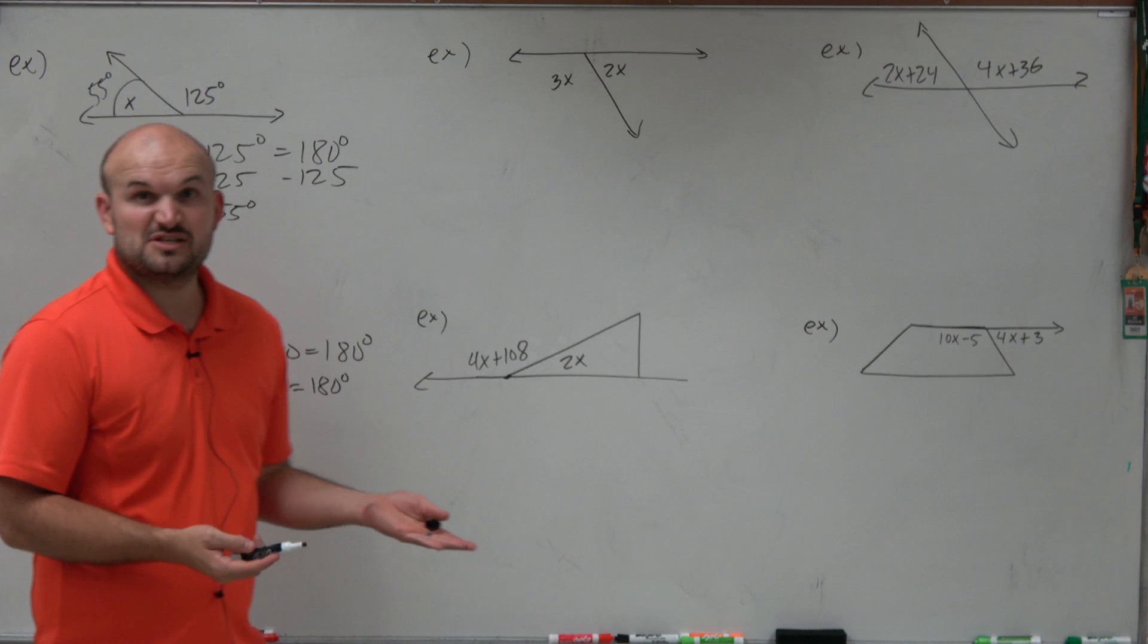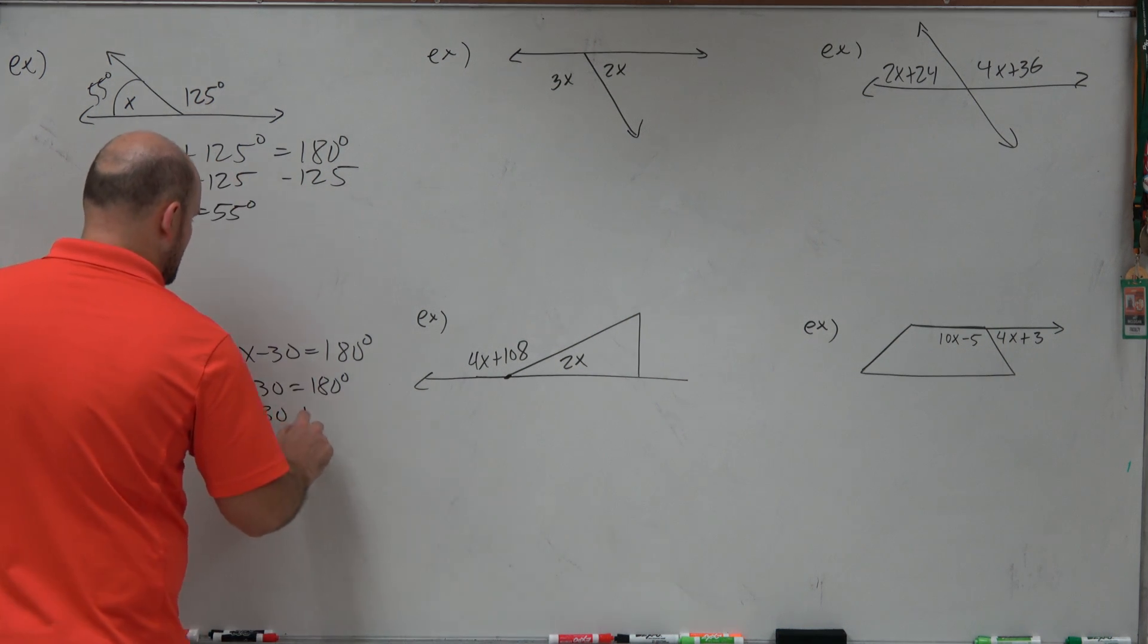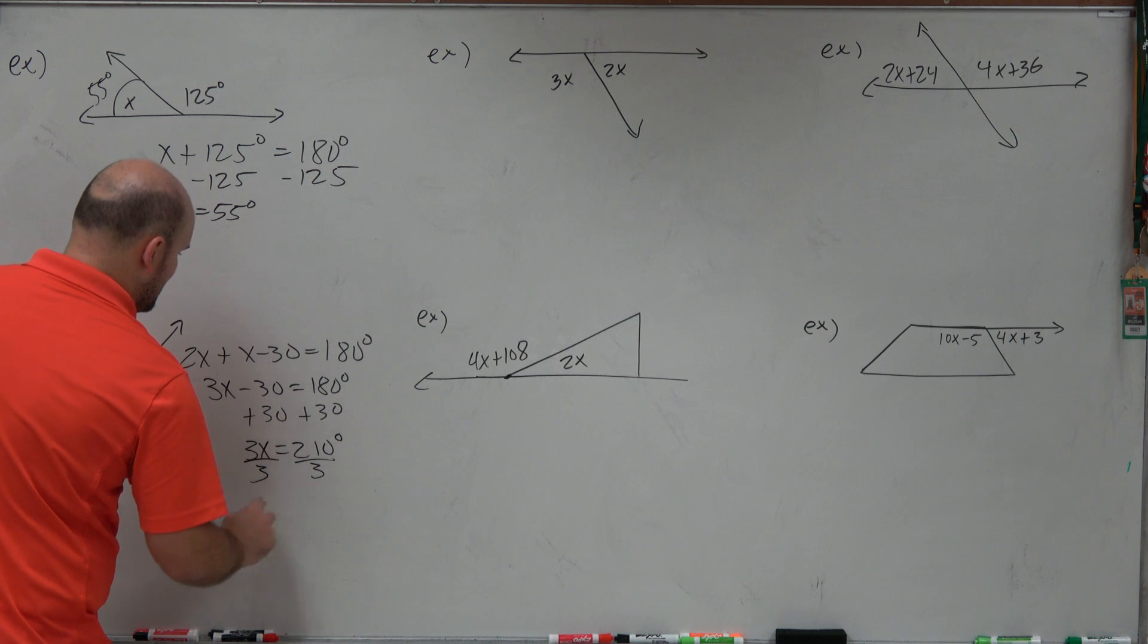And now, I have a two-step equation that I'm just going to solve for x. So I'll add 30 degrees, add 30 degrees. I get 3x is equal to 210 degrees. Divide by 3, divide by 3, x equals 70 degrees.